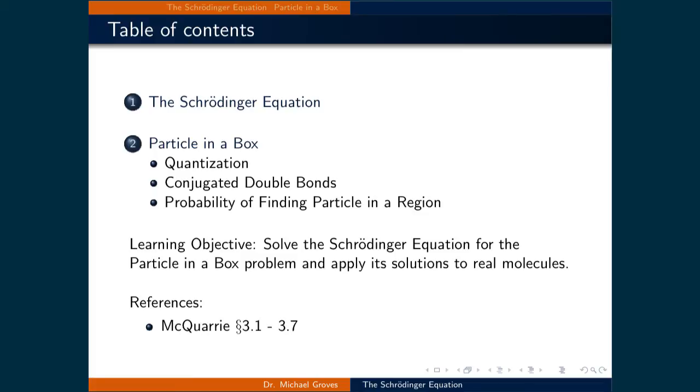This lecture is broken down into two parts. The first part introduces the Schrödinger equation, while the second part applies it to the particle-in-a-box problem. By looking at this problem, we can practice calculating some important quantum mechanical properties and even apply it to conjugated double bonds to get a reasonable estimation of their emission spectra.